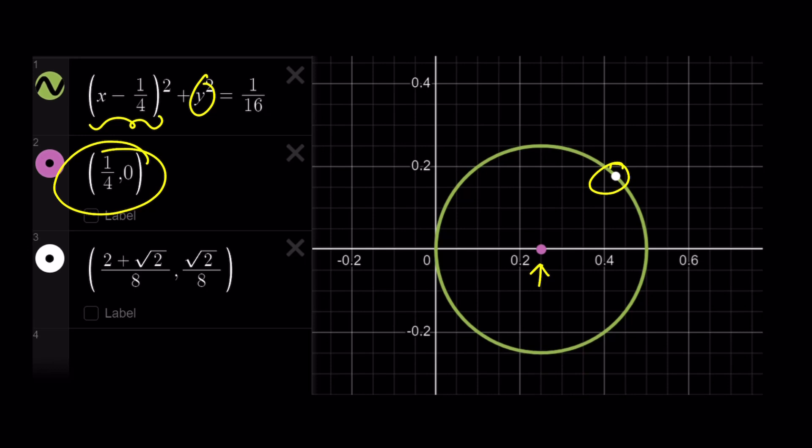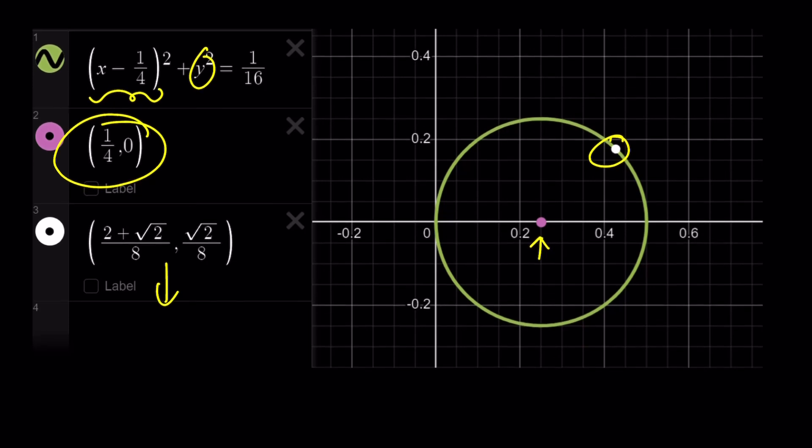It just means that it is actually, 1 over 4 comma 0 basically means that it is a complex number that you can write as a real number, right? So, and that would have, that would basically be something like this.